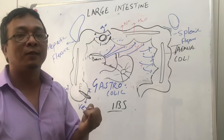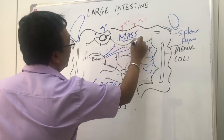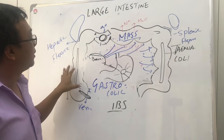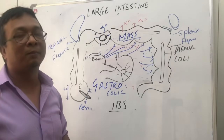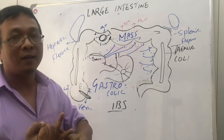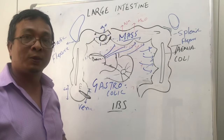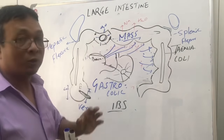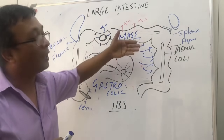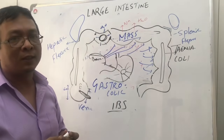To summarize GI motility: (1) haustral shuttling, (2) peristalsis, (3) mass movement — only in the transverse and descending colon. In the large intestine there are large numbers of bacteria compared to the small intestine. This gut flora secretes vitamin K, helps in absorption, and produces gases like carbon dioxide and methane. The bacteria also cleave food particles into short-chain fatty acids like propionate and acetate, which help in absorption of sodium and water. The gut flora also produces immunity.